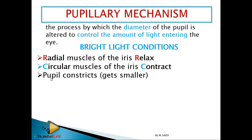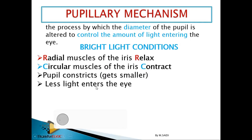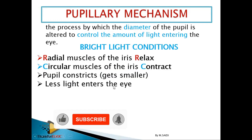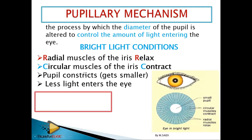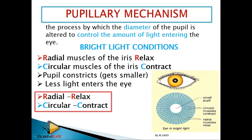When the circular muscles contract, the pupil constricts — it gets smaller and then less light enters the eye. A simple mnemonic: R goes with R, C goes with C. Radial muscles relax and circular muscles contract. When they contract, less light enters the eye.